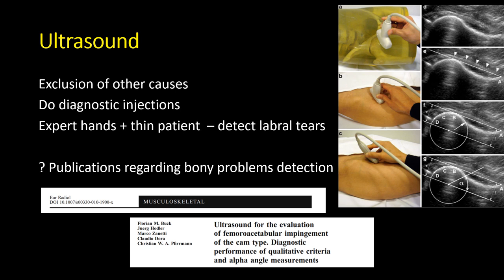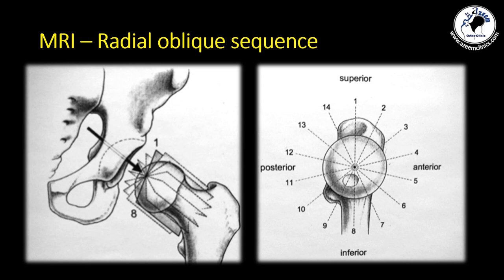Ultrasound in an expert's hand and in a suitably thin patient can define and detect labral tears. Some publications in the literature also address identification of bony problems and detection of the alpha angle using ultrasound.